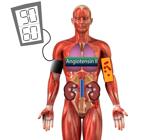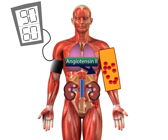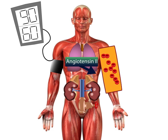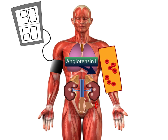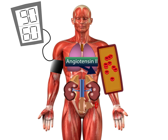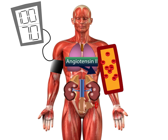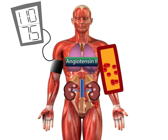Angiotensin 2 has both short-term and long-term effects on the body. First, the body needs to get blood pressure back up. Angiotensin 2 quickly signals vasoconstriction, reducing the diameter of the vessels and getting blood pressure back up even at a lower blood volume.